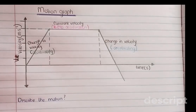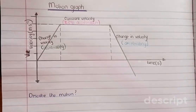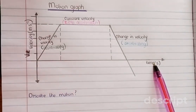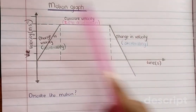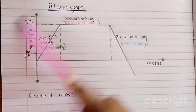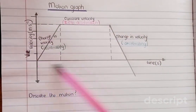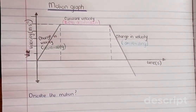Hello guys, today we'll be doing the motion graph — the velocity versus time graph. I'll explain what is happening in the velocity versus time graph, then we'll get into the questions that are found in the past papers.